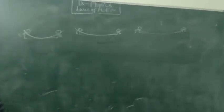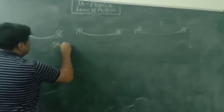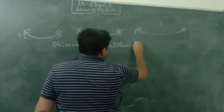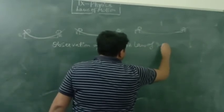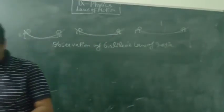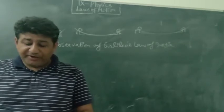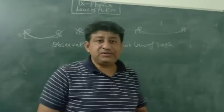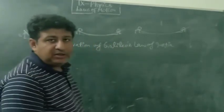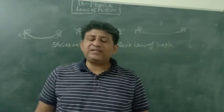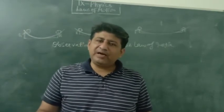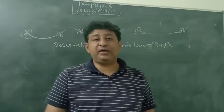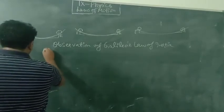Now let's write down the observations of Galileo, on the basis of which Newton later gave his law. This is known as Galileo's law of inertia. The statement is: a body, if once set in motion, moves with uniform velocity if no external force acts on it.